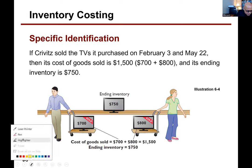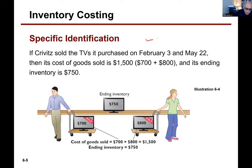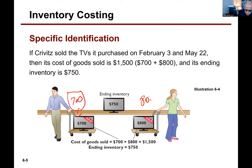When an entity uses the perpetual inventory method, which is what we talked about in this class, what will happen is they will have to update their inventory account after each purchase. Let's say they purchase three TVs — one for $750, one for $700, and one for $800. What would be the journal entry for purchasing those TVs? Say they purchase them on account.